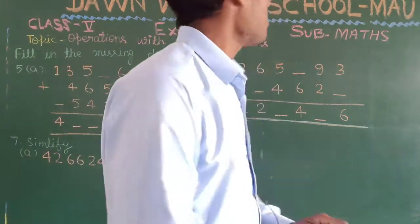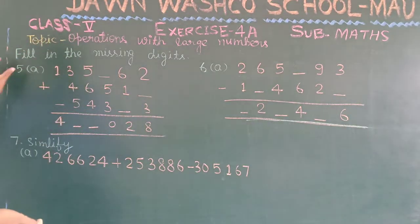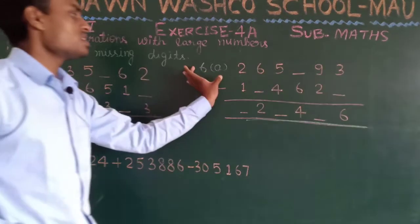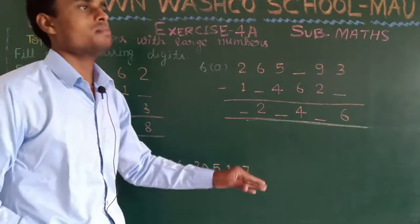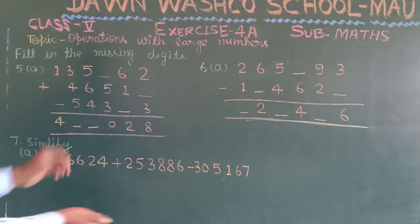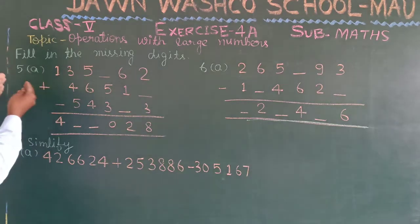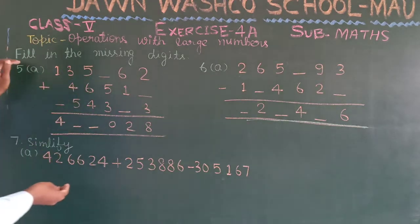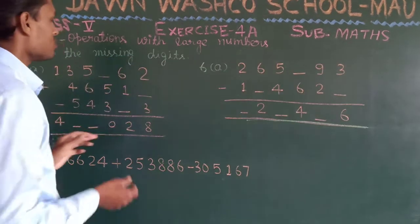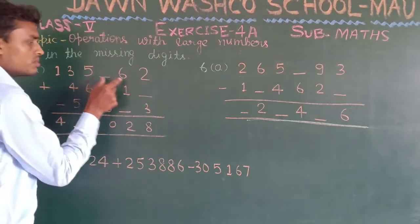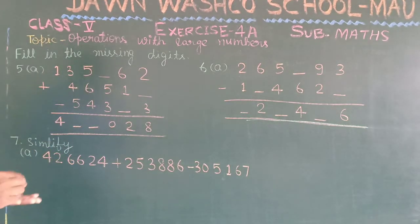Hello dear students, welcome back to your math classes. In this video we will solve question number 5a, question number 6a, and question number 7a from exercise 4a of your math book — Junior Math. The topic is operations with large numbers. In question 5a we have to fill in the missing digits.